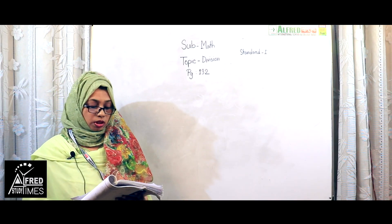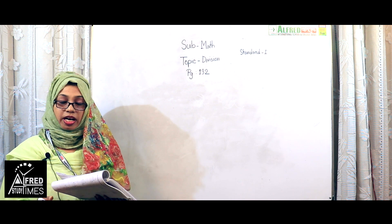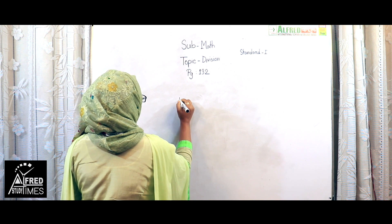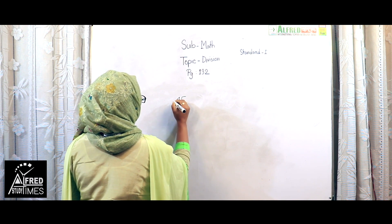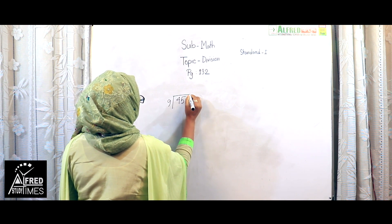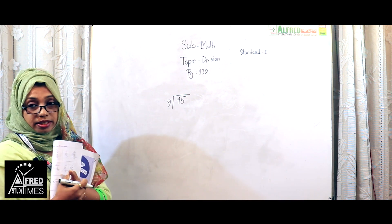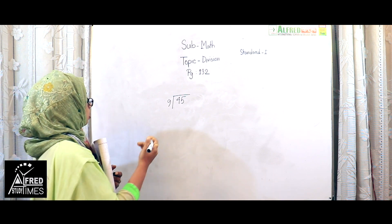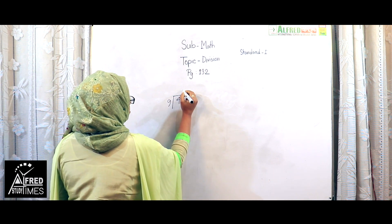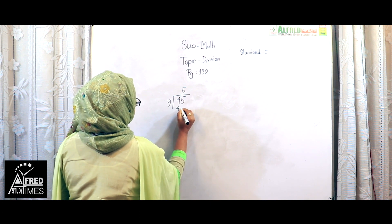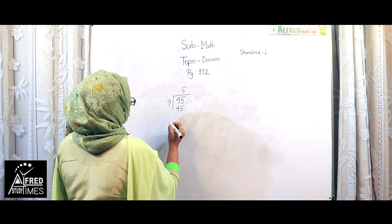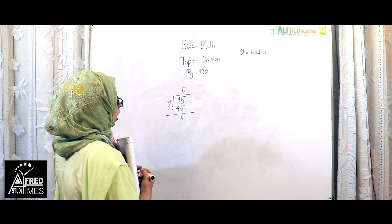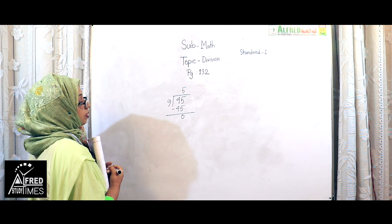Now long division. We will have to divide 45 divided by 9. We have to use the 9 times table here. So recall the times table of 9: 9 fives are 45. Write the subtract sign here, and the remainder is 0.